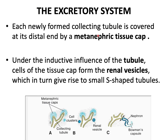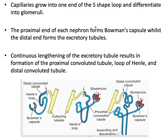Each newly formed collecting tubule is covered at its end by the metanephric tissue cap, which is under an inductive influence. Under the inductive influence of the tubule, the cells of the tissue cap will form an S-shaped renal vesicle. You have the metanephric tissue caps in blue, and under the influence of the tubule these blue regions will form renal vesicles with an S-shaped structure. Eventually this is going to form the Bowman's capsule.